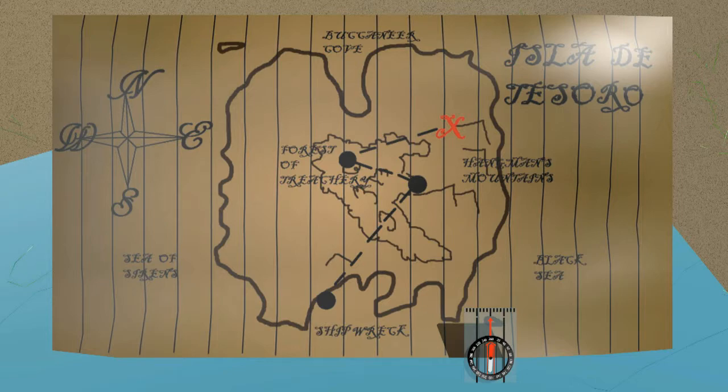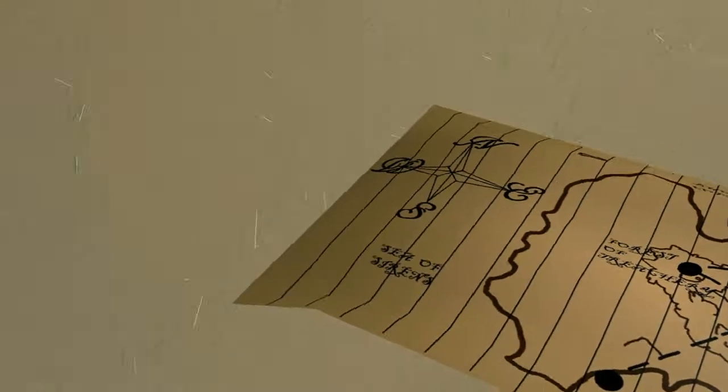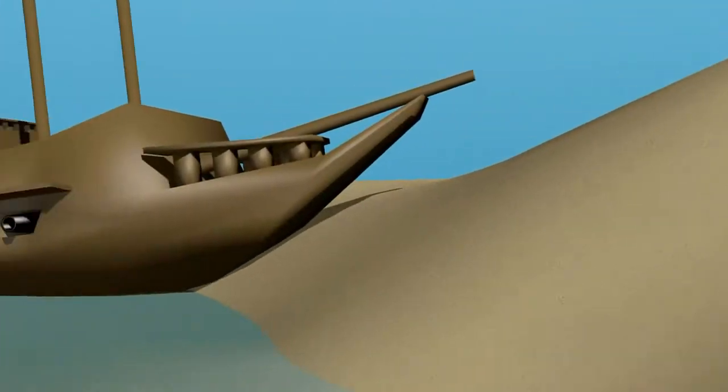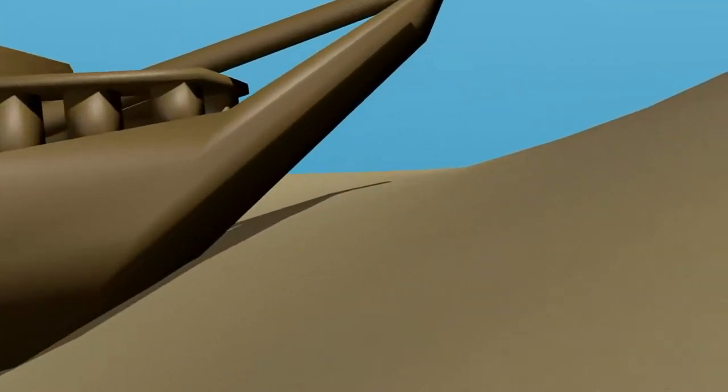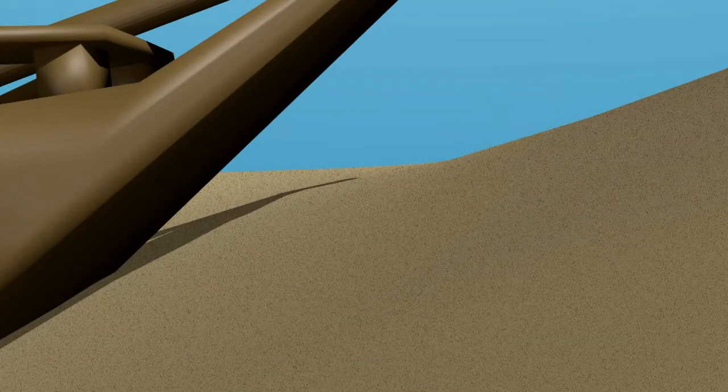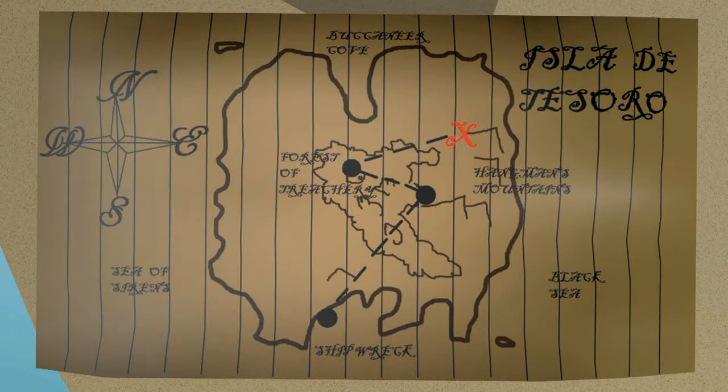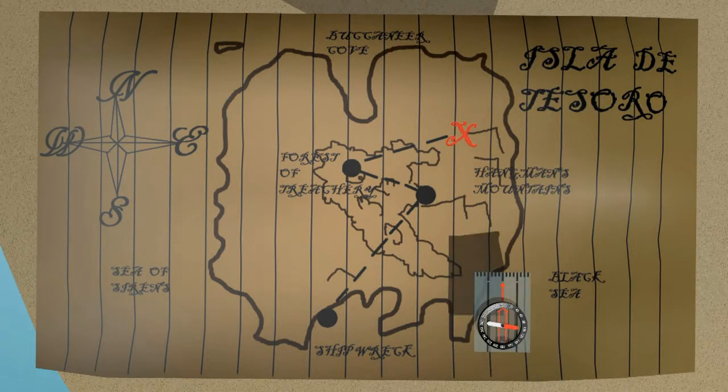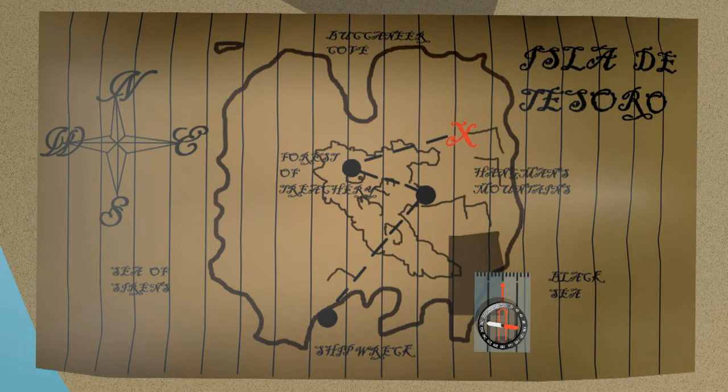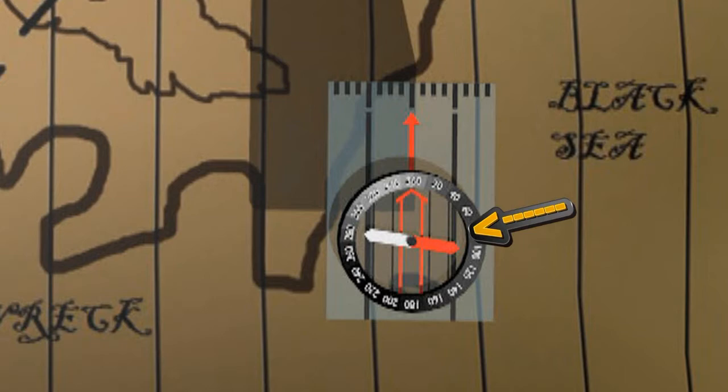Let's start at our first landmark, the shipwreck, and I'll show you how to orienteer. Okay, here we go. Let's get out our map. Now let's get out our compass. The needle that always points north we ignore while using the map. Forget about it.